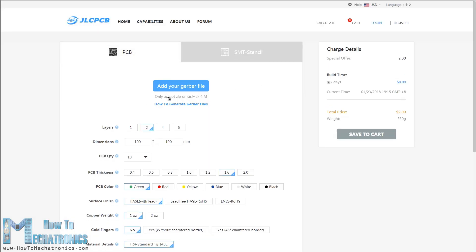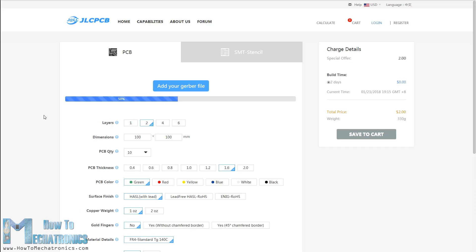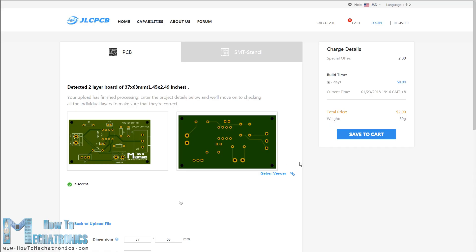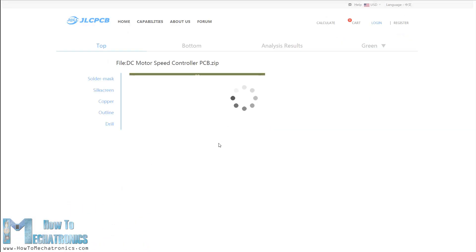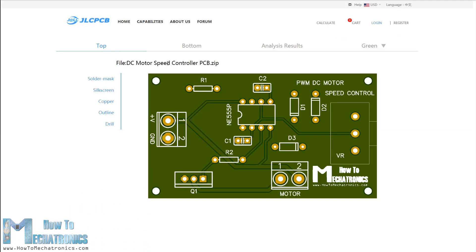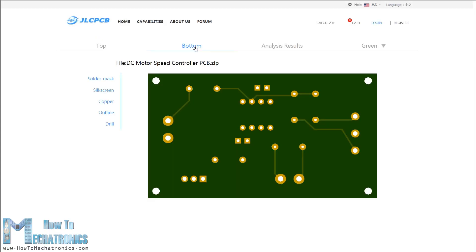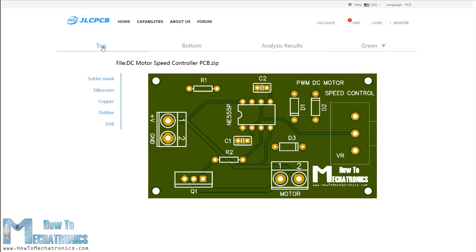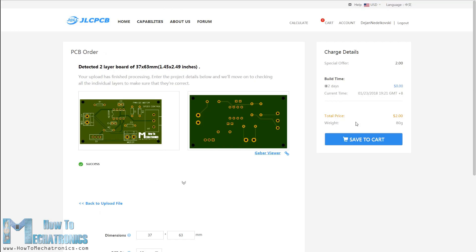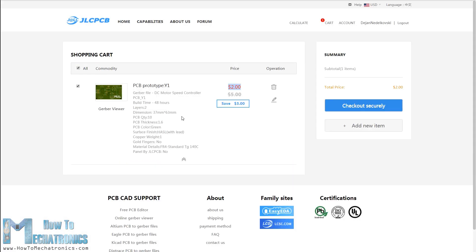Here we can simply drag and drop the downloaded zip file of the Gerber files. After uploading we can once again review our PCB in the Gerber viewer. If everything is fine we can go on and select up to 10 PCBs and get them for only $2.